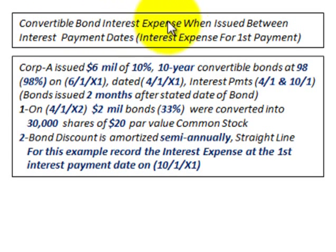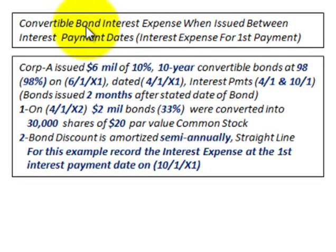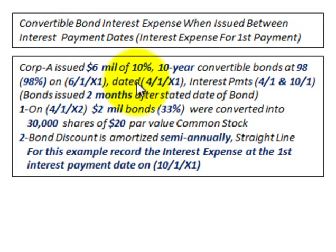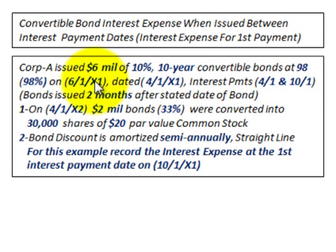We're going to be looking at convertible bonds and interest expense when they're issued between interest payment dates, specifically for the first interest payment date on this bond. For example, Corporation A issued $6 million worth of bonds at 10%. They're 10-year convertible bonds, issued at 98% of par on 6-1-X1, and the bonds are dated on 4-1-X1. The interest payment dates each year are on 4-1 and 10-1, semi-annual interest payments. These bonds were issued two months after the stated date on the bond.